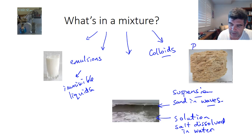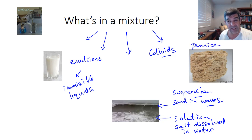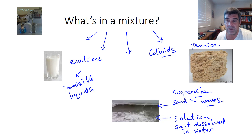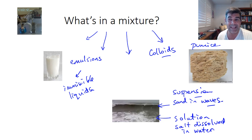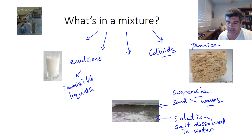This little sample of pumice is an unusual example, but it gives you an idea of what a colloid looks like. There's a matrix, or main component, which is the rock itself. And then the holes — the spaces, the air spaces — are the other material that is equally distributed throughout this particular colloid.